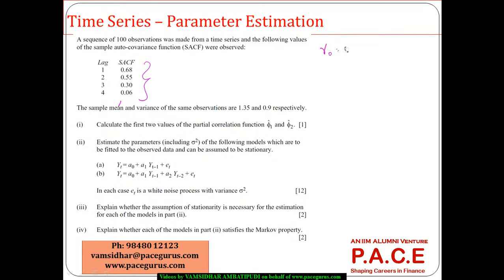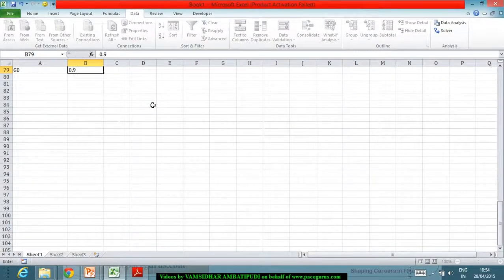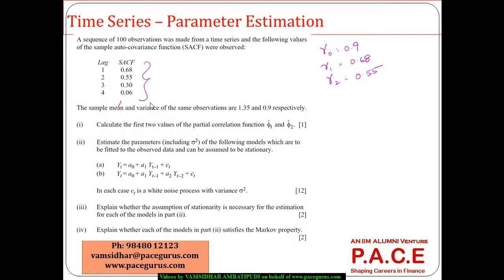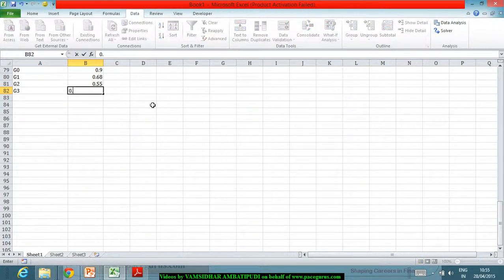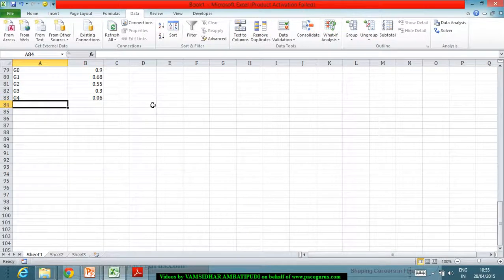So γ0 is 0.9. Now γ1 is 0.68, γ2 is 0.55, γ3 is 0.3, and γ4 is 0.06.